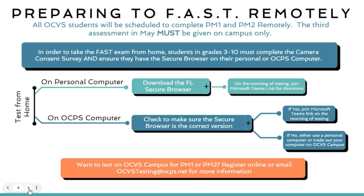For testing remotely, there are a couple of different ways that you can do that. You can either test on a personal computer — you'll just need to download the secure browser, and then you will get a link on the morning of testing with directions for how to hear the script and how to sign in. Or you can do it on your OCPS computer. When your child received their computer at the beginning of the school year, it had the most up-to-date secure browser. However, the state is constantly making changes, so if it is not working, you might need to update the secure browser or try on your personal computer.